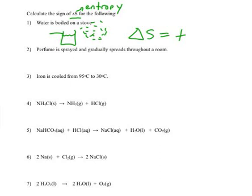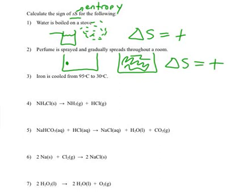Perfume is sprayed throughout a room. So you have a room, and initially the perfume is in one area. And now it is spread throughout the room. So this has more randomness to it. It can be anywhere in the room. Here it's located in just one spot. So delta S is again going to be positive.